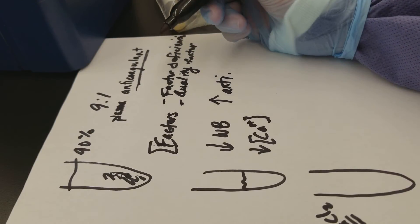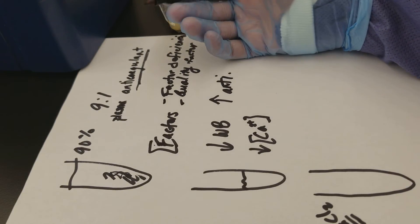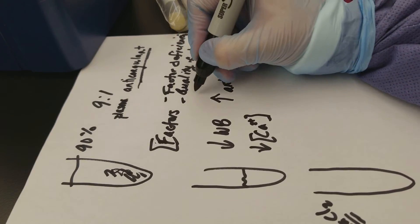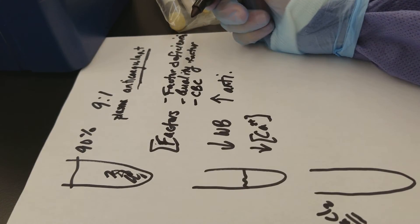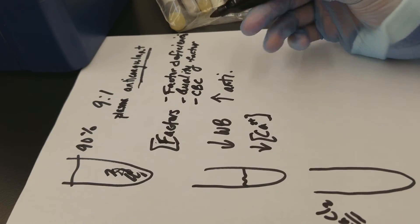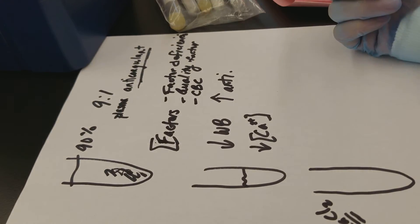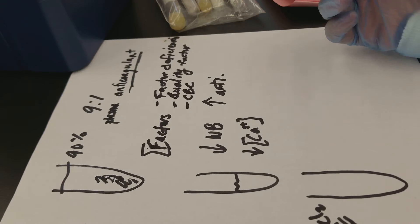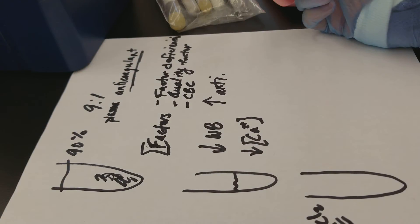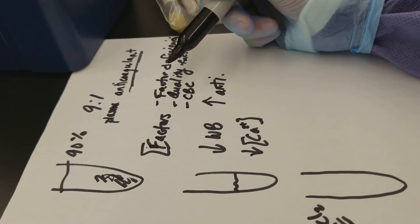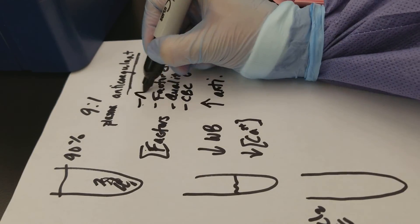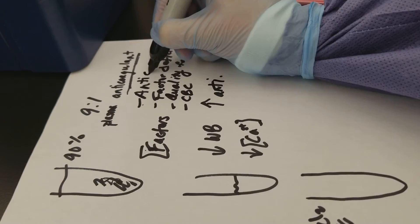There might also be a platelet problem. So we would keep in mind our CBC results as well. So we can look at our platelet count there as well. And these would all work hand in hand together. So hematology and coag are very closely knit in regard to how to interpret these results. It could also be that the patient is on anticoagulant therapy, which is a big deal.